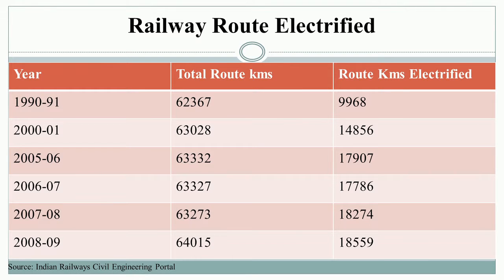In terms of railway route electrification in the reform period, the route electrified reached 18,559 kilometers, which was only 9,969 kilometers in 1990-91 at the time of economic reforms. So in around 20 years' time, India achieved roughly double growth in terms of electrification of railway routes in kilometers.